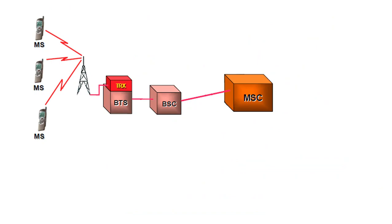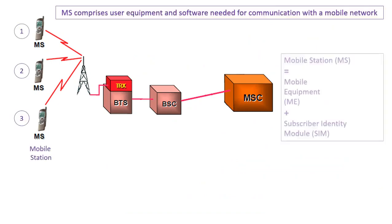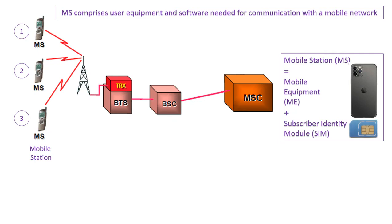I am taking a diagram in which there are three mobile stations which are further connected to a tower. These towers are connected to BTS using TRX, then further it is connected to BSC and MSC. Now what is MS?